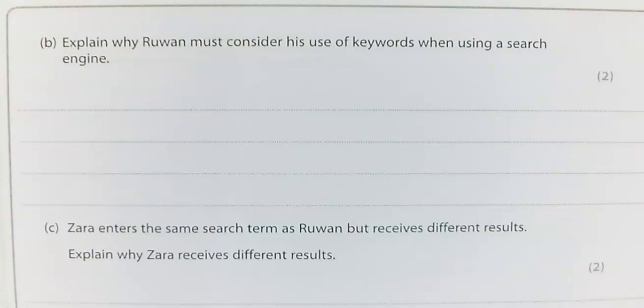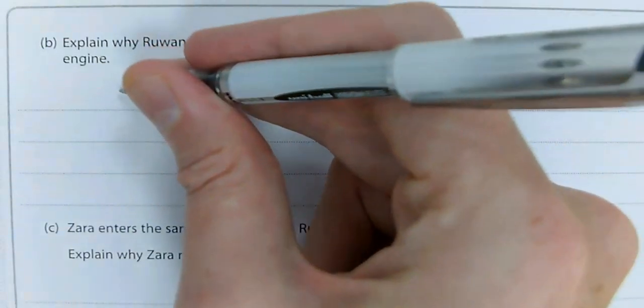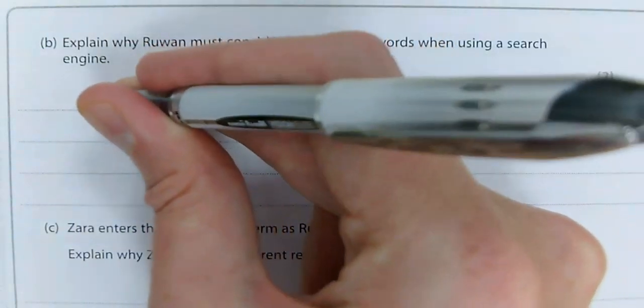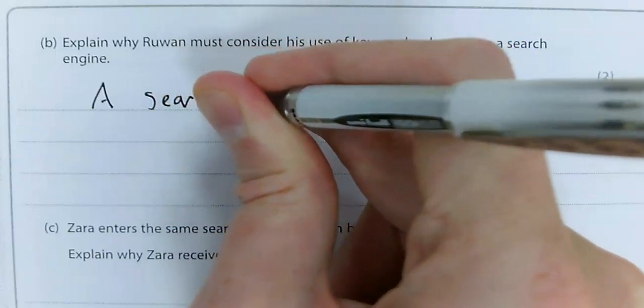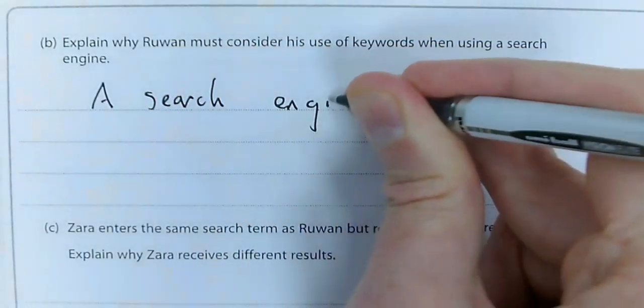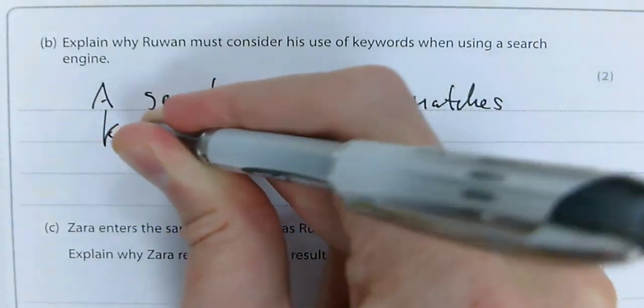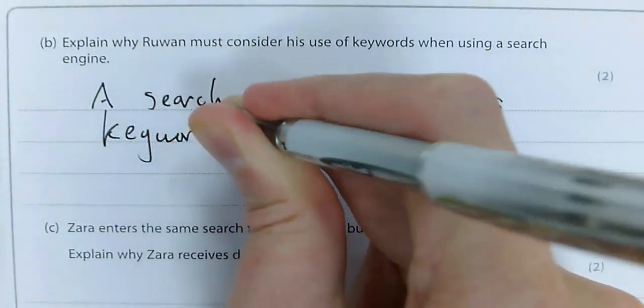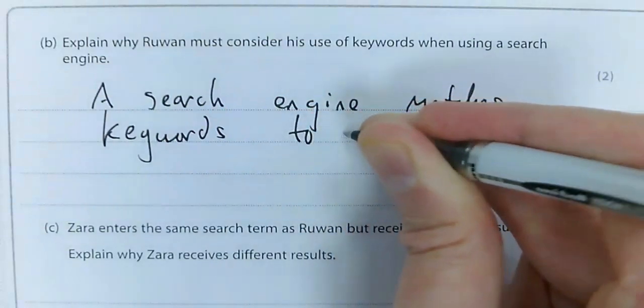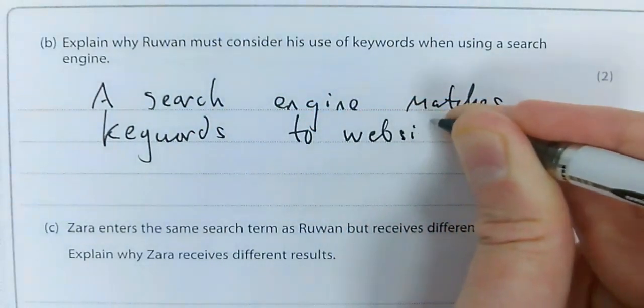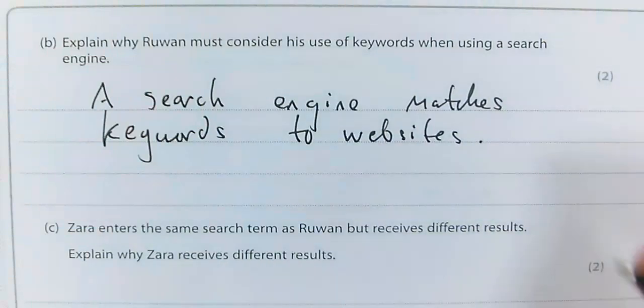Exam tip here: you must mention matching keywords to websites. So your answer is, a search engine matches keywords, one mark, to websites, so related websites, two marks, so you can find more relevant websites.